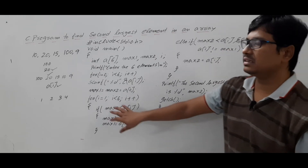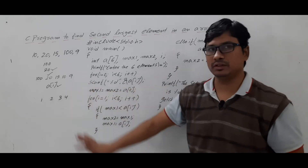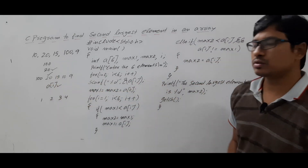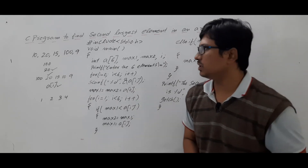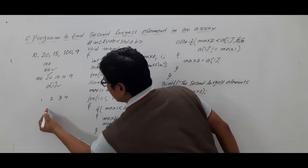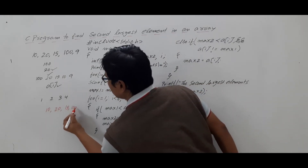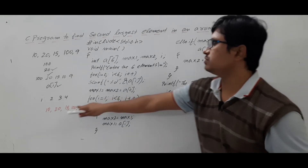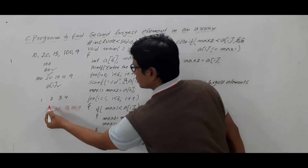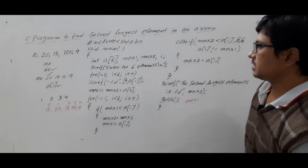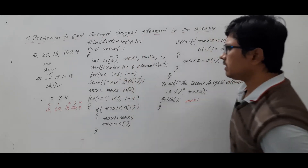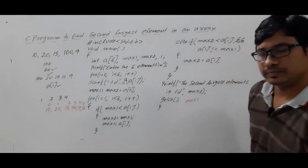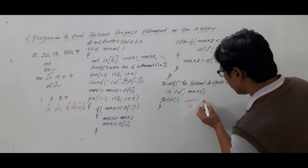This is the C program to find the second largest element in an array without sorting. Now let me trace through a simple example using the array: 10, 20, 15, 100, 9 — at indices 0, 1, 2, 3, 4. Initially max1 = a[0] = 10, and max2 = 10 as well.